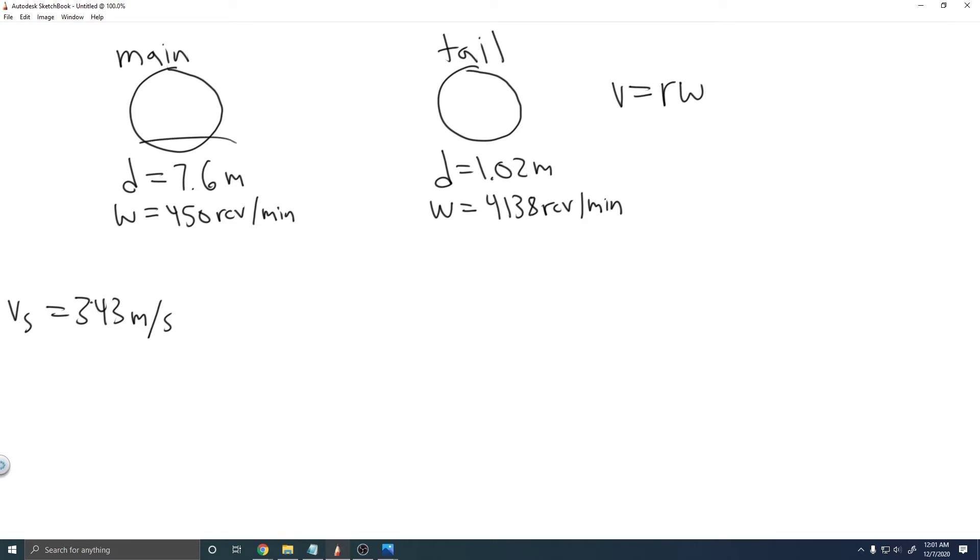So first thing we got to do is let's divide these by 2 to get the radius. So if you divide it by 2, 7.6 divided by 2 is just 3.8 meters. That's going to be the radius. And then for this one, it's just going to be 0.51. The radius is just 0.51 meters.